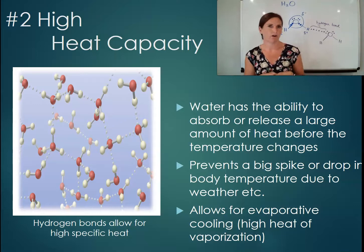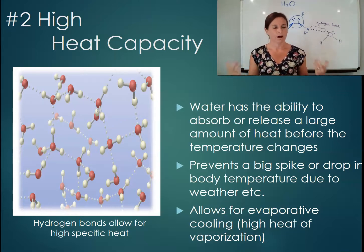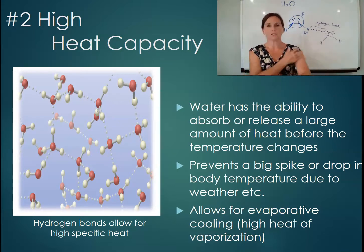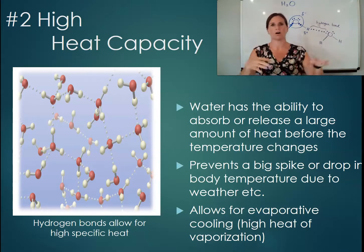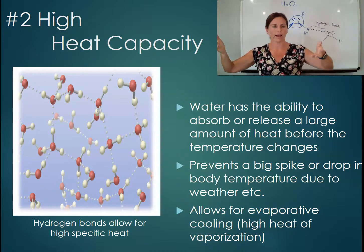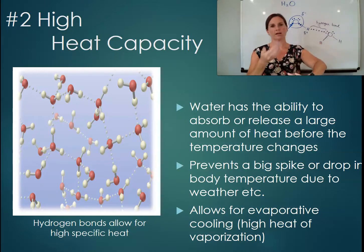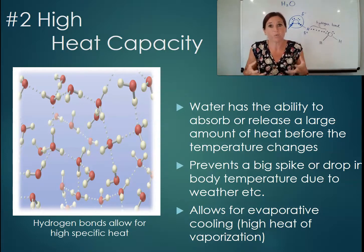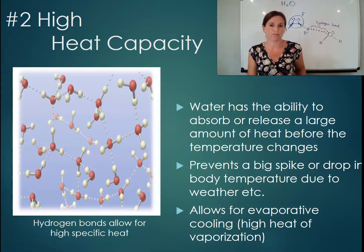Water's high heat capacity also prevents big spikes and drops in temperature on earth and in our bodies, unlike what happens on planets like Mars. It also allows for evaporative cooling — on a hot day if you wet your arms and walk away, as the water evaporates off your skin, the water molecules pull the heat from your body with them. That's essentially what happens when we sweat.